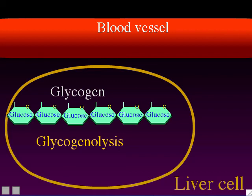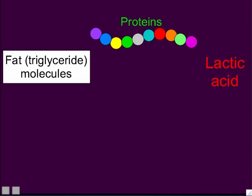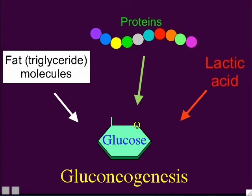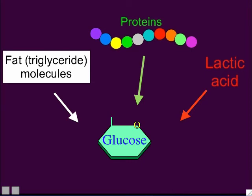A second strategy your body can use to boost blood sugar levels is called gluconeogenesis, which means making new glucoses. Your body has the ability to construct new glucose molecules from fat molecules, from protein molecules, or from lactic acid molecules — the products of anaerobic respiration. So if blood sugar is getting low, your body can change fats, proteins, or lactic acid into blood glucose. The name gluconeogenesis: gluco means glucose, neo means new, and genesis means making — literally making new glucose molecules.